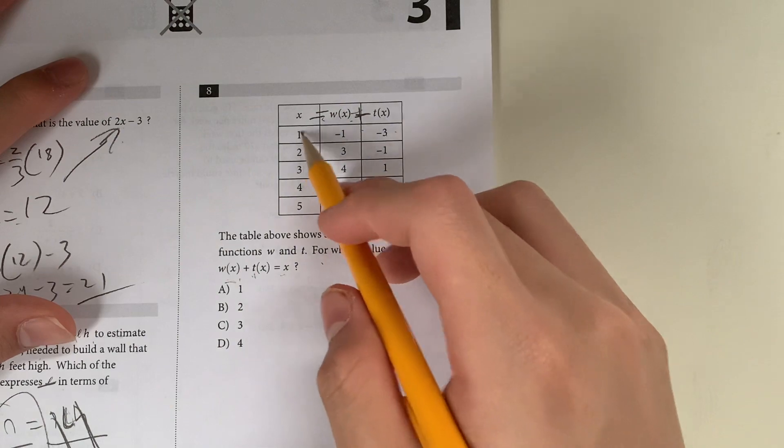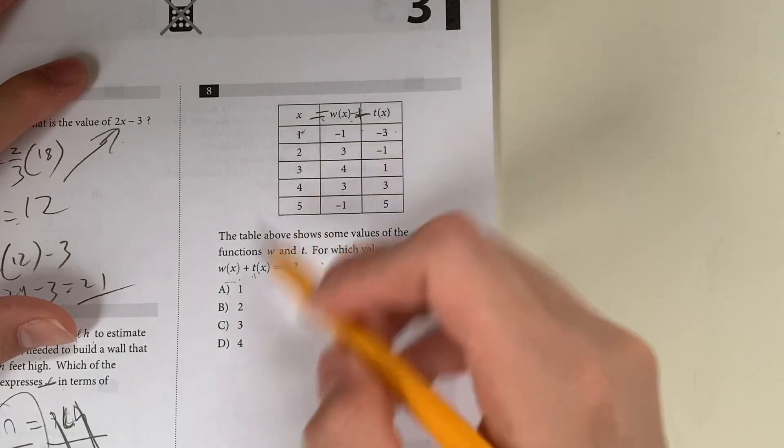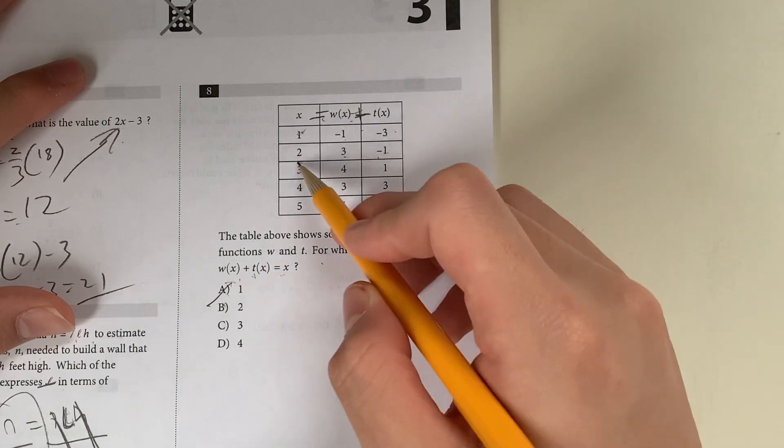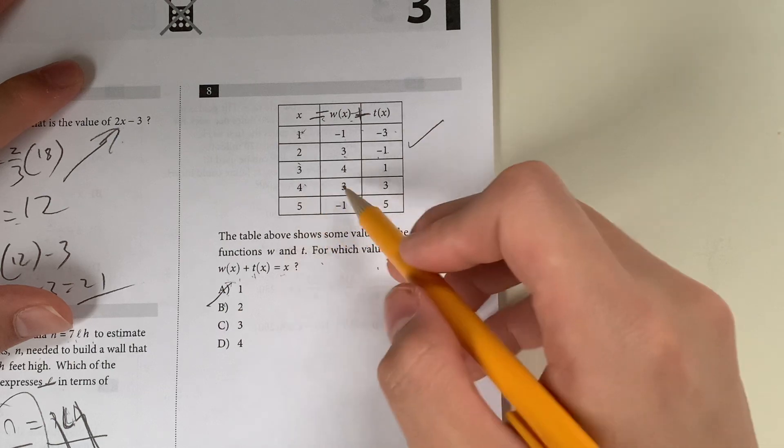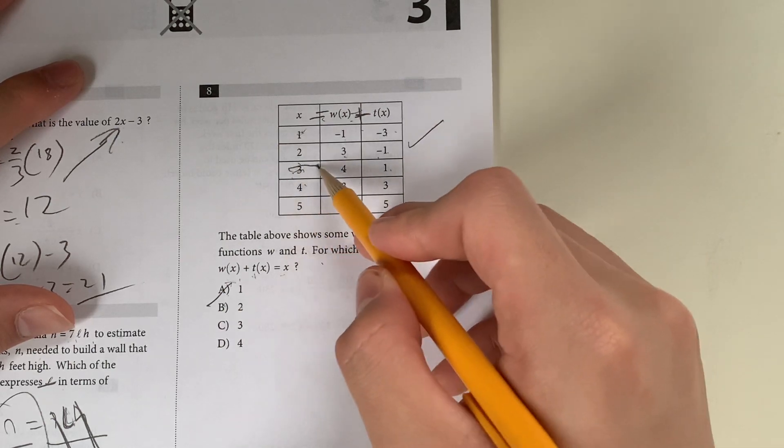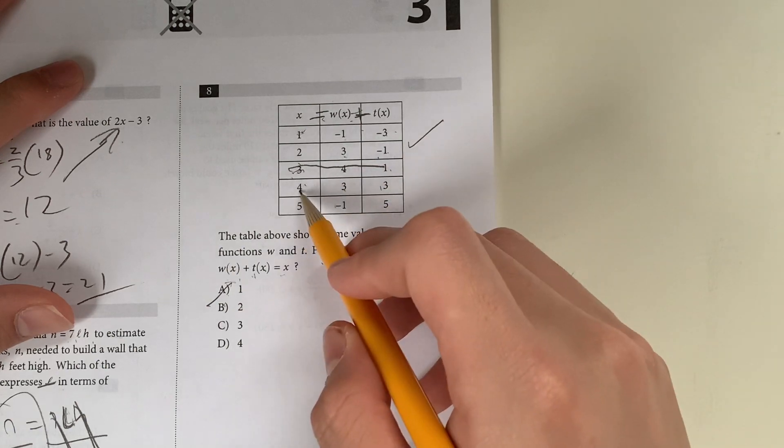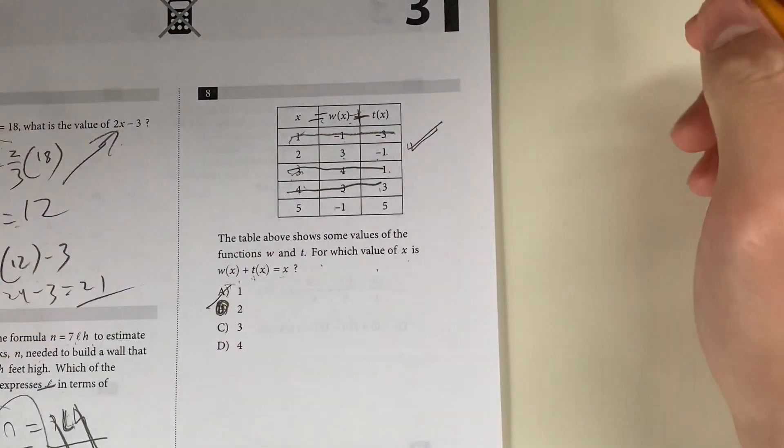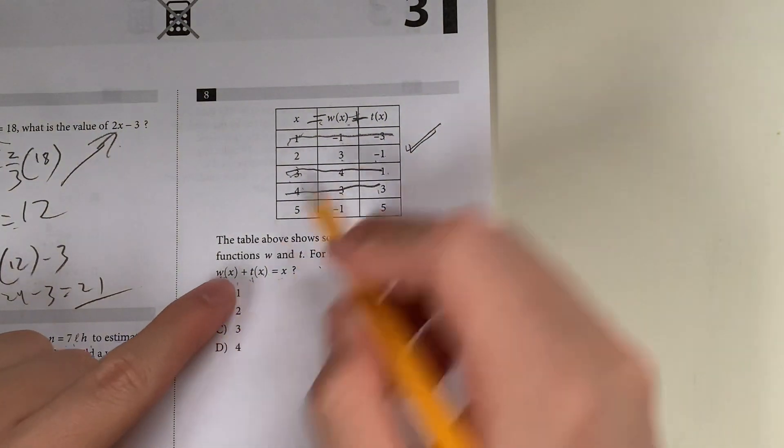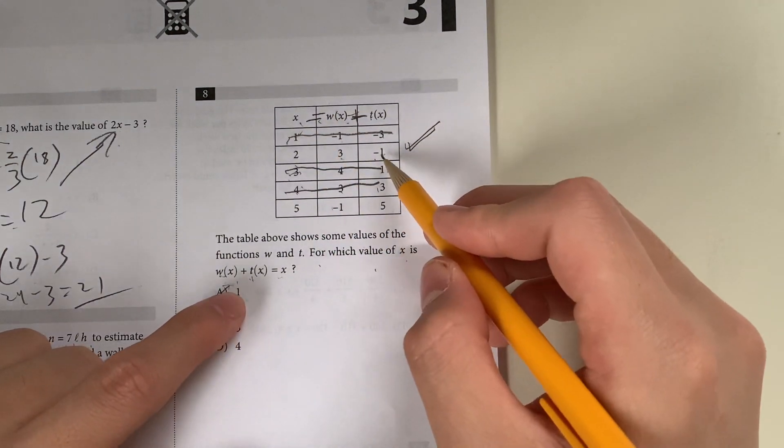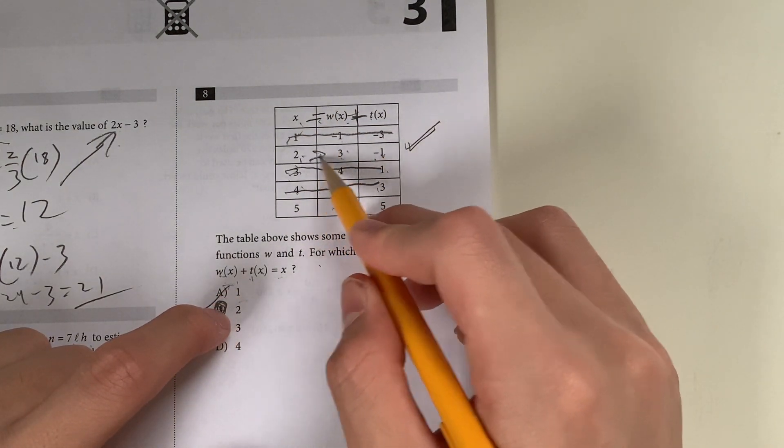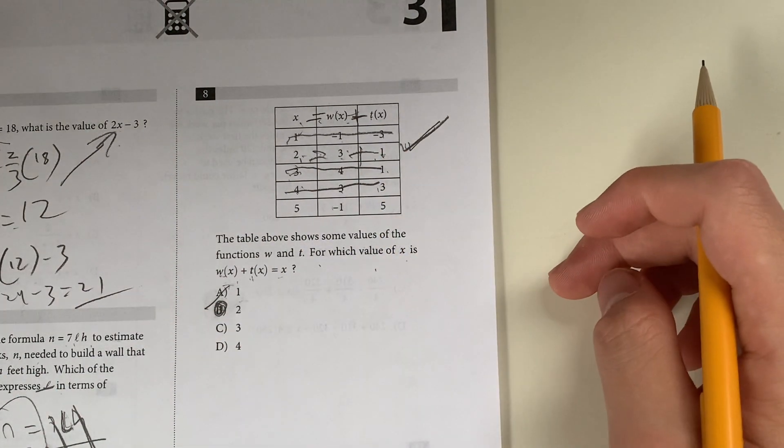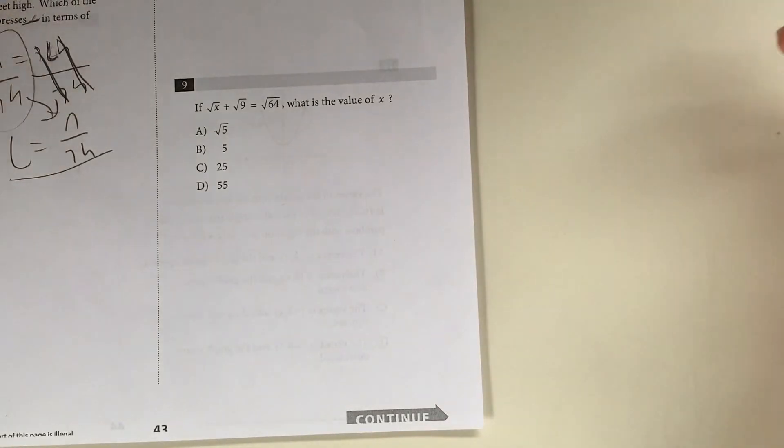Negative 3 plus negative 1 is negative 4. Negative 4 does not equal 1, so it's not going to be 1. Let's try 2. 3 plus negative 1 is 2, so this does work. Let's try 3. 4 plus 1 is 5, which is not equal to 3. And lastly, 3 plus 3 is 6, which is not equal to 4. Your only choice possible is B, 2, because all they're asking is this value plus this value has to equal this value. This one's a very special question. Probably won't show up, but if it does, that's how you solve it.